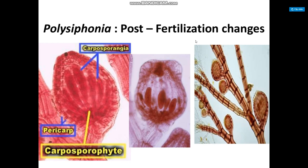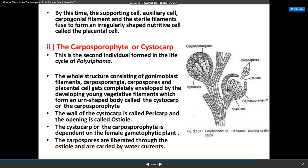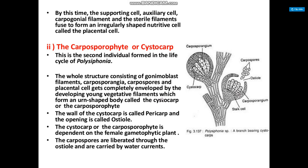The contents of each carposporangium differentiate into a single diploid carpospore. This figure shows the post-fertilization changes of Polysiphonia. The supporting cell, auxiliary cell, carpogonium filament, and sterile filaments fuse to form an irregularly shaped nutritive cell called the placental cell. The carposporophyte is the second individual formed in the life cycle of Polysiphonia. The whole structure consisting of gonimoblast filaments, carposporangia, and carpospores gets completely enveloped by vegetative filaments forming an urn-shaped structure called the cystocarp.